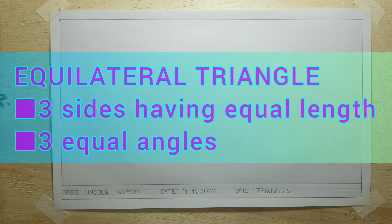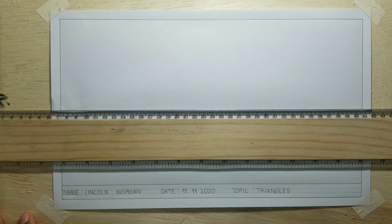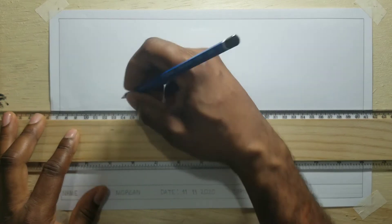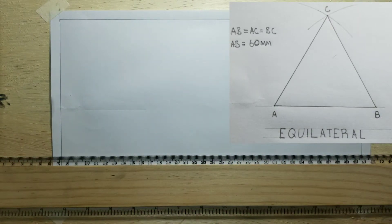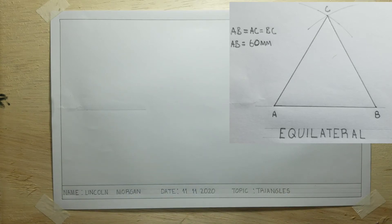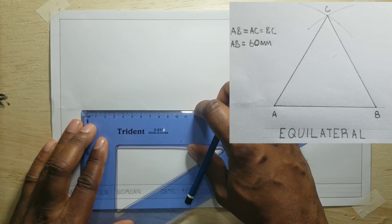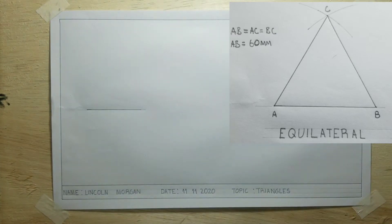The three angles of this triangle will also be equal in measurement. I will now construct an equilateral triangle where the length of all sides are 60 mm. The first step is that I will draw my line AB to measure 60 mm. For clarity's sake, I will go ahead and outline my 60 mm on this line. So AB is 60 mm.